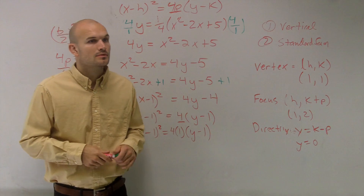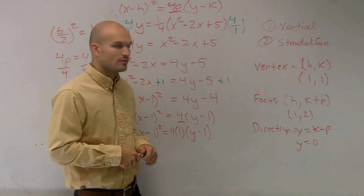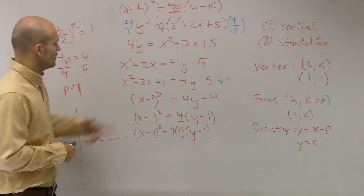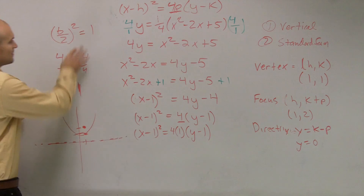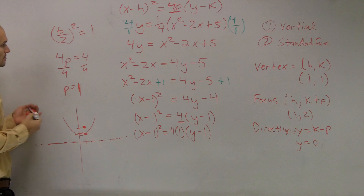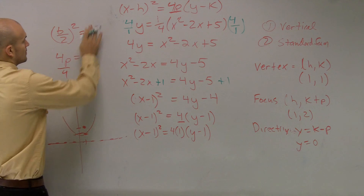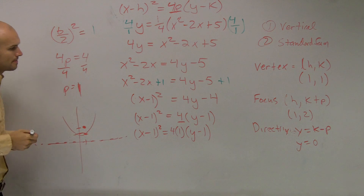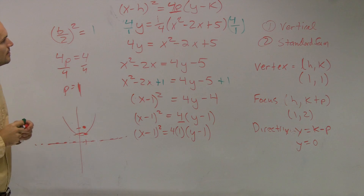Student question: Where did you get the 1 from? That 1 came from completing the square — you take b divided by 2 and square it. That is a b, not an x.